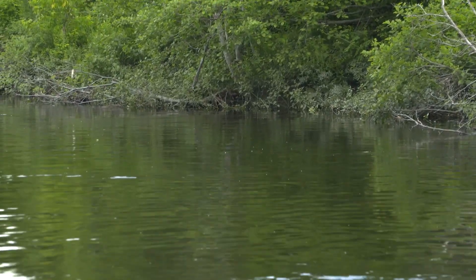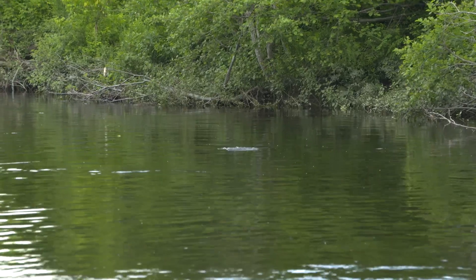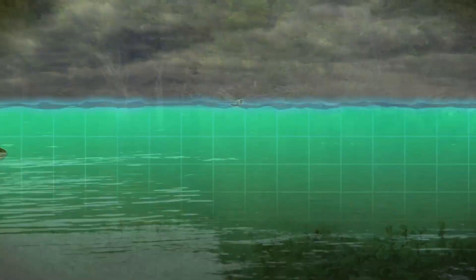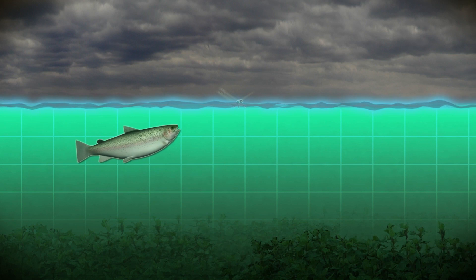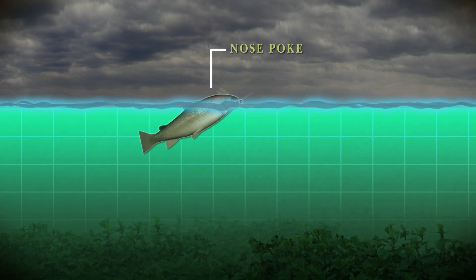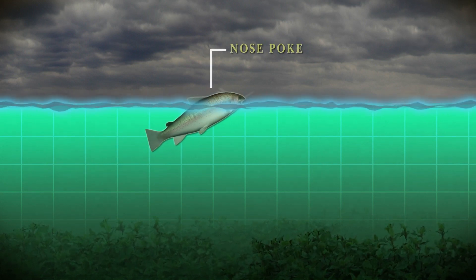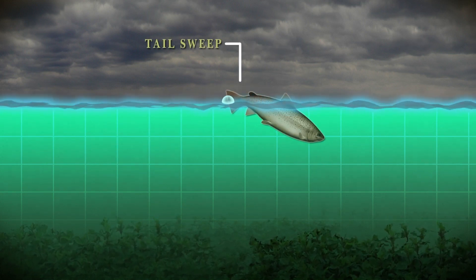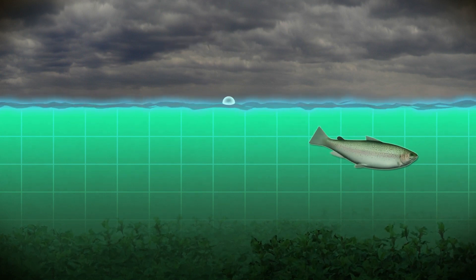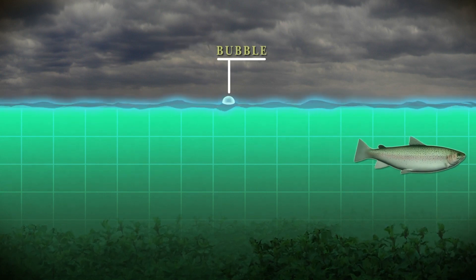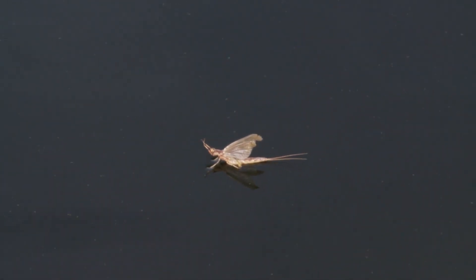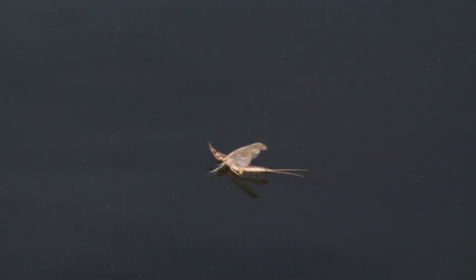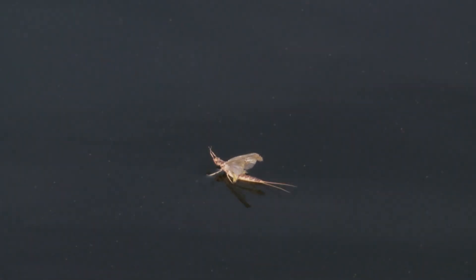The rise form will reveal what the trout is likely eating. For example, you might see a subtle surface disturbance in a slow, smooth run. The rise will only show the nose of the trout and the tail following, and usually a bubble is left behind. The subtle rises indicate food that isn't going anywhere, usually a mayfly dun or spinner drifting passively in the current.